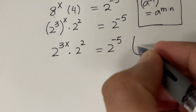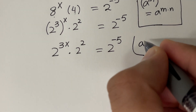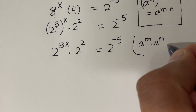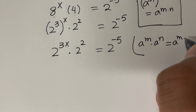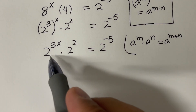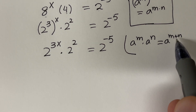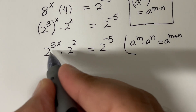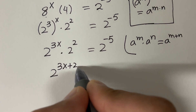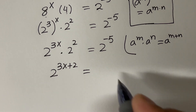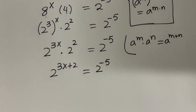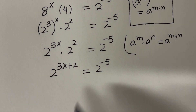Now we use the property that a raised to the power m times a raised to the power n equals a raised to the power m plus n. So if you have the same base, just add the exponents. That means 2 raised to the power 3x plus 2 equals 2 raised to the power minus 5.